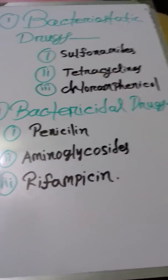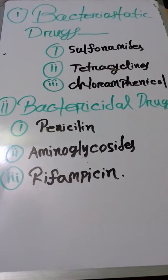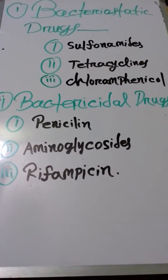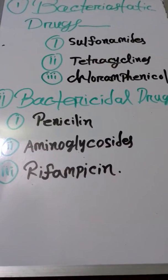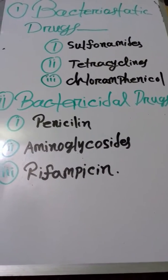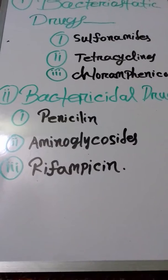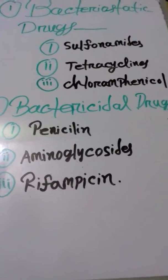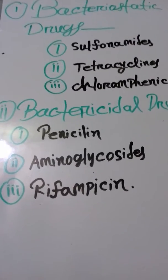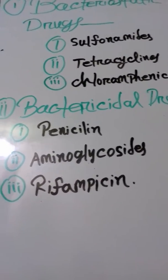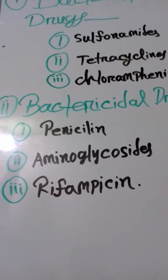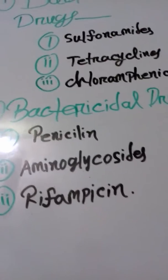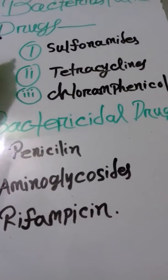Bacteriostatic drugs and bactericidal drugs. Bacteriostatic drugs are sulfonamides, tetracyclines, chloramphenicol. And bactericidal drugs are penicillin, aminoglycosides, rifampicin. I will make a mnemonic that should be easy — sulfonamides is S.